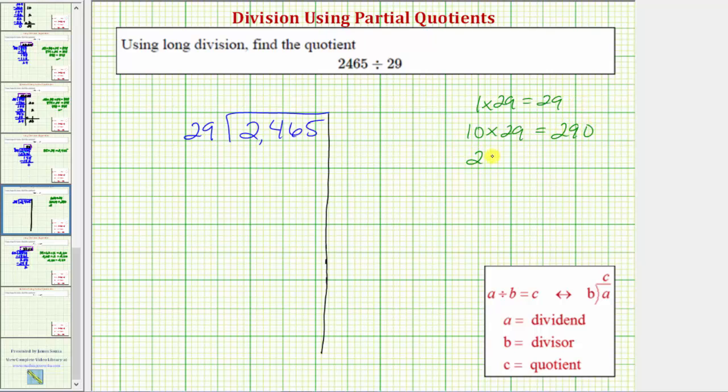And then from here, 2 times 29 would be equal to 29 plus 29, or 58. And therefore, 20 times 29 is equal to 580.